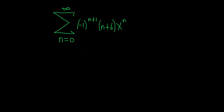In this problem, we have to find the interval of convergence for this power series. So let's go ahead and go through it. We'll start by using the ratio test. The ratio test says when you take the limit as n goes to infinity of the absolute value of a sub n plus 1 over a sub n,